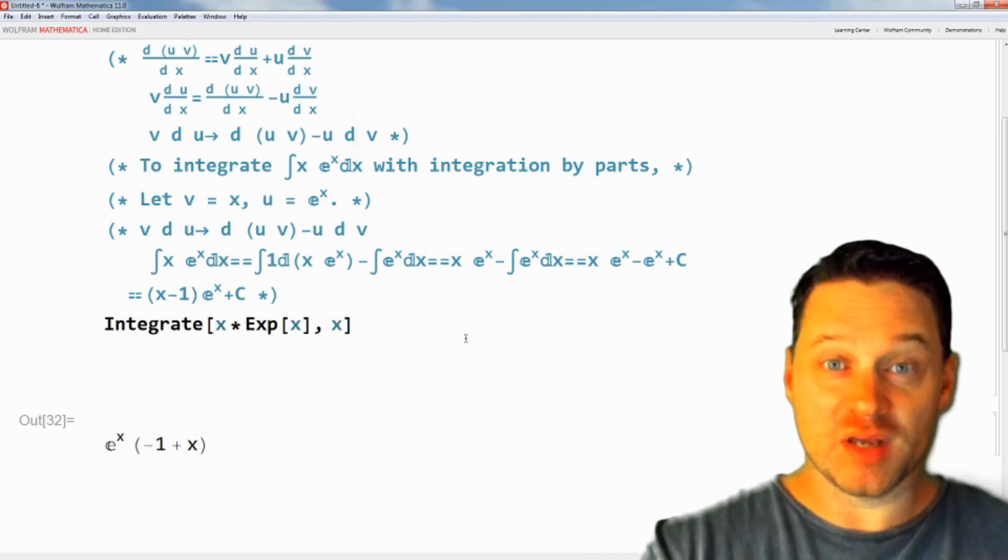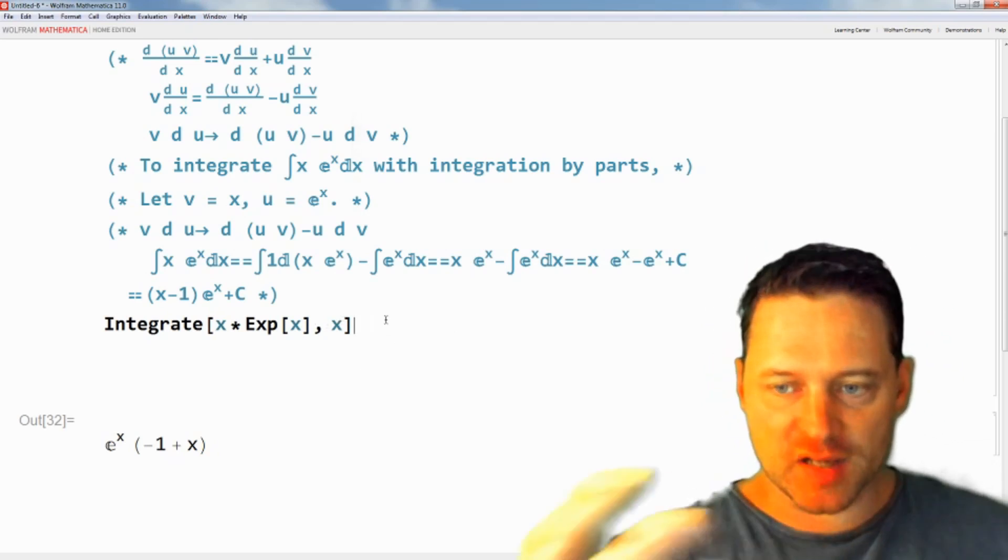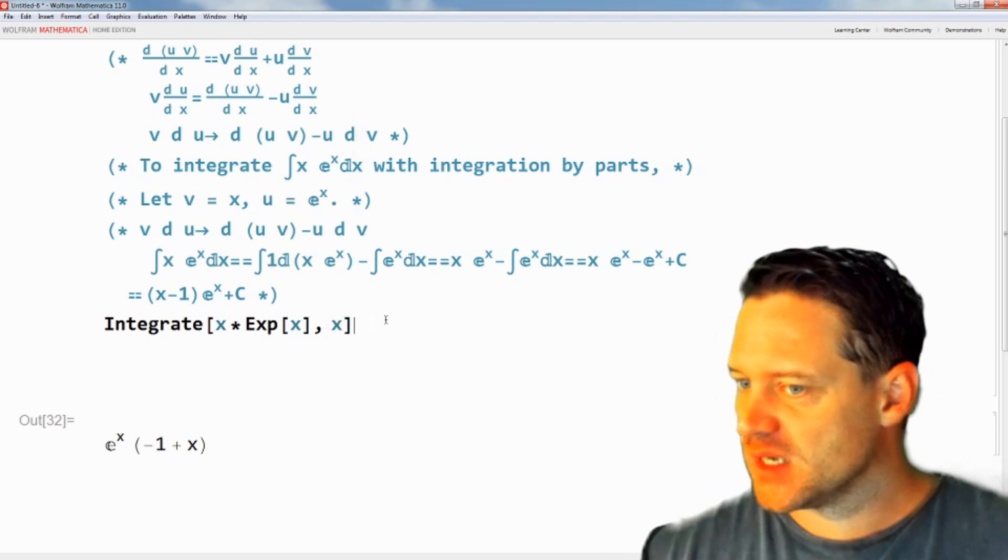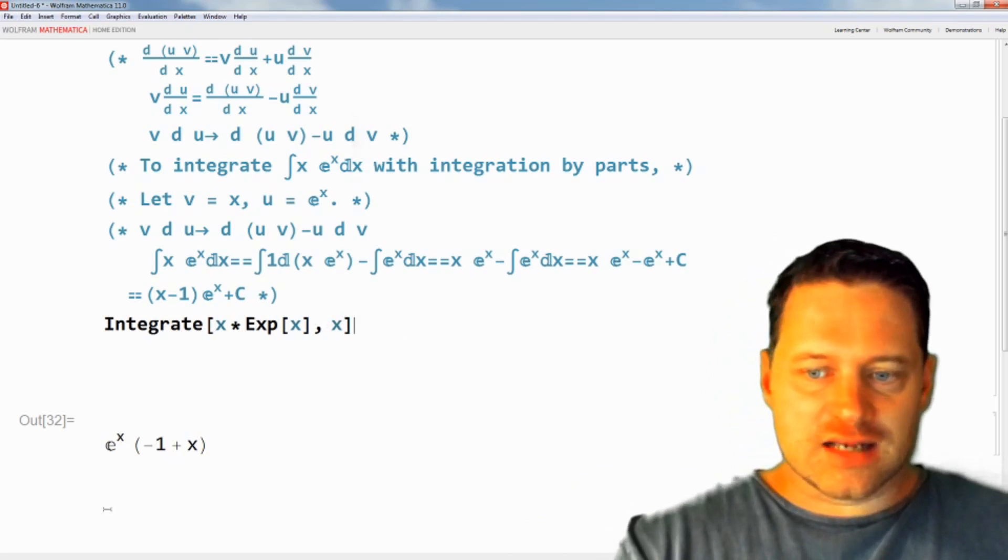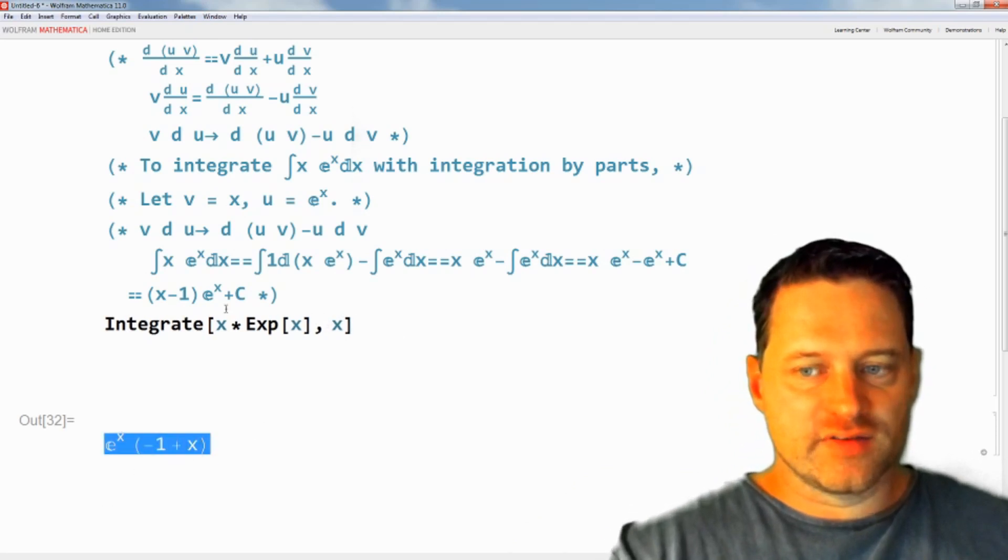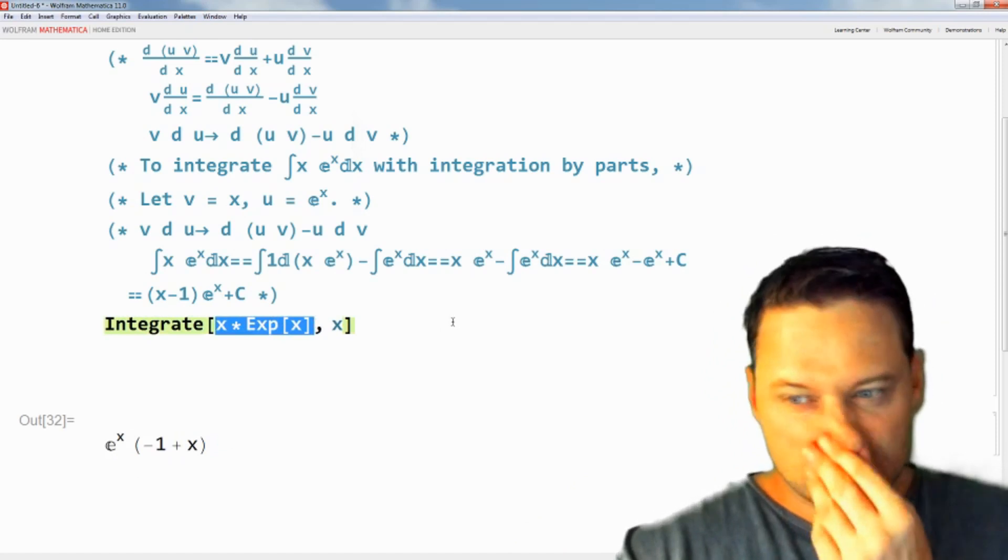And of course, we all want to be correct, so you should add plus c when you do this by hand. This just says that this is one antiderivative of this function.